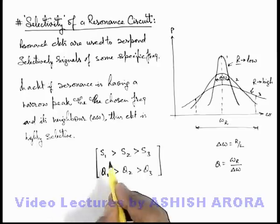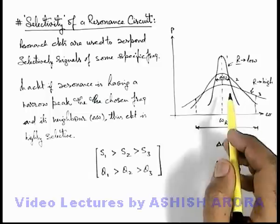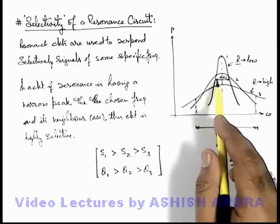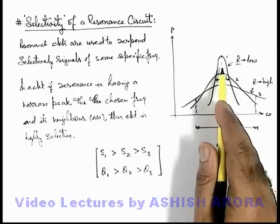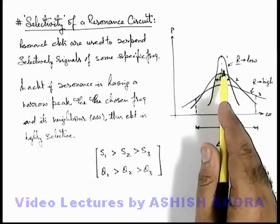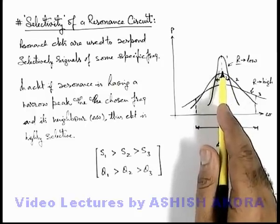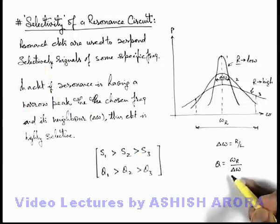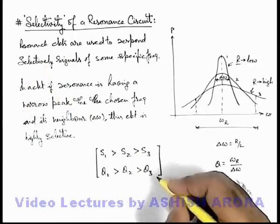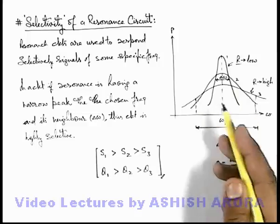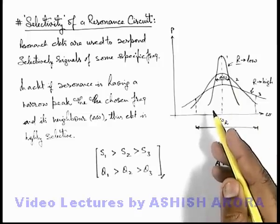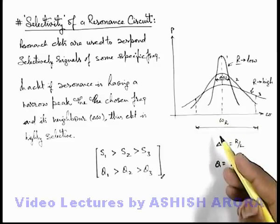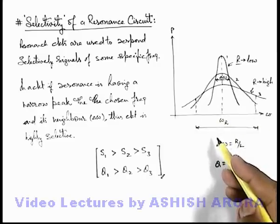Both parameters — selectivity and quality factor — give us the idea about the selection of a frequency range which is more than half power. If it is narrow peaked, we call it highly selective. Selectivity is a qualitative term to define the numerical value of the Q factor. The physical significance of selectivity will be studied and analyzed in detail when we study about the communication of signals.